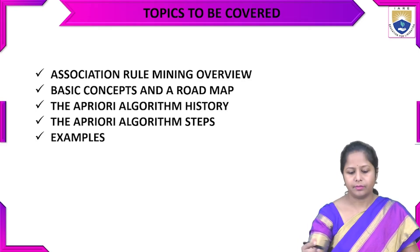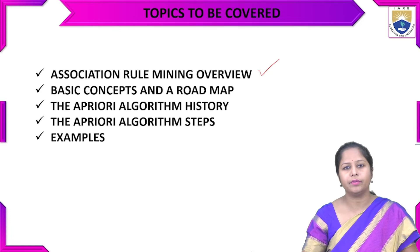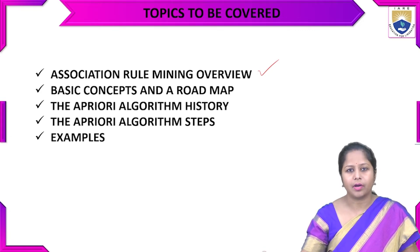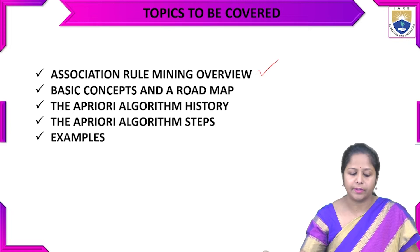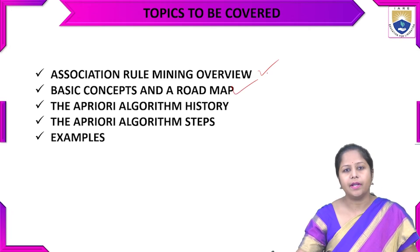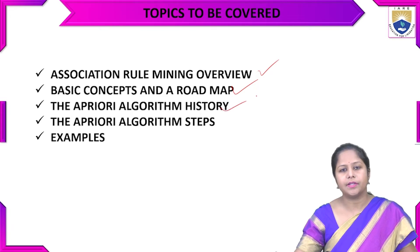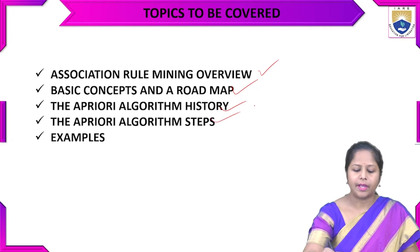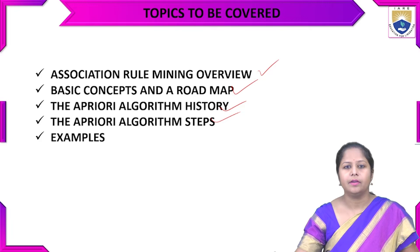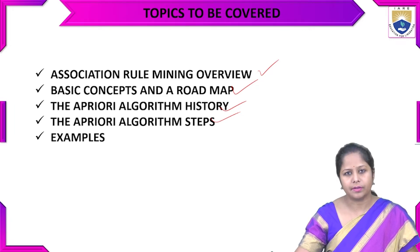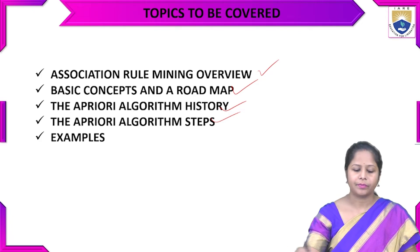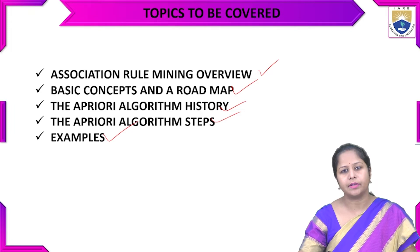Our today's topic will be association rule mining overview. We'll see a quick review of what was there in association rule mining. We will cover the basic concepts and a roadmap of the Apriori algorithm, the history of the Apriori algorithm, the Apriori algorithm steps — how many steps are there and what steps we have to do — and we'll see one example for that. Let's start.